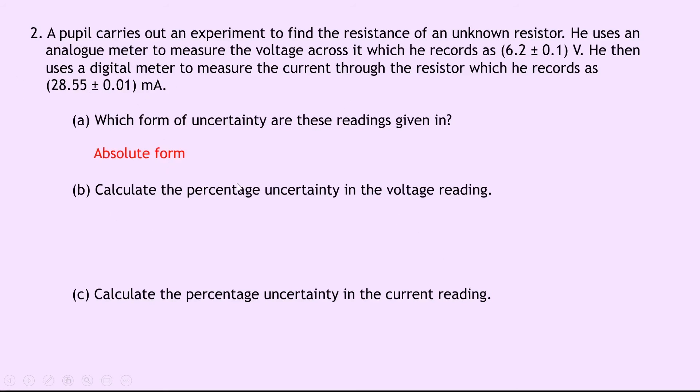Part B says to calculate the percentage uncertainty in the voltage reading. So we're going to look at the voltage reading over here, so we've got 6.2 plus or minus 0.1 volts. Remember percentage uncertainty is the absolute uncertainty divided by the measurement times 100. So this gives us the 0.1 divided by the 6.2 times 100, which gives a percentage uncertainty of plus or minus 1.6%.